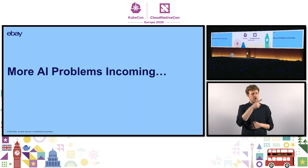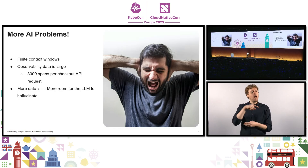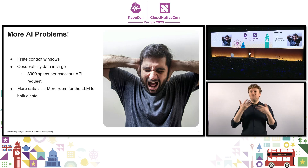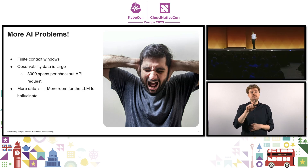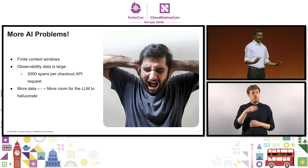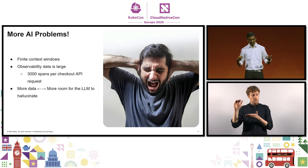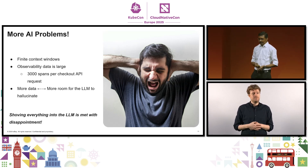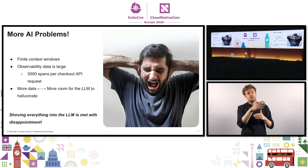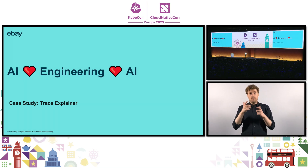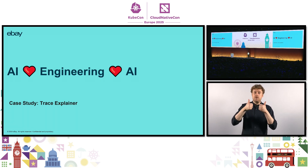But this doesn't necessarily eliminate the problems with AI. There are finite context windows we need to work with, and typically the data is large. Our checkout API has 3,000 spans, and there are use cases with 8,000 spans per request. If you shove all of it into the LLM, you won't fit within the context window. The more data you give the LLM, the more it will hallucinate over time. So shoving everything into the LLM is going to be met with disappointment. This is when we realized that AI and engineering are in a love-love relationship — it is important to use both for their strengths, and combining them will help us achieve something truly magical.